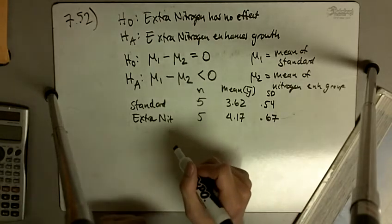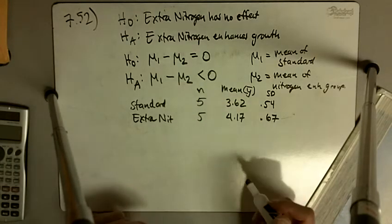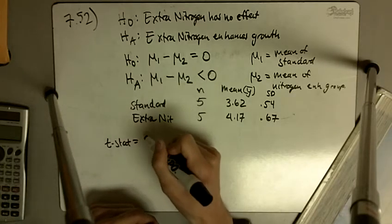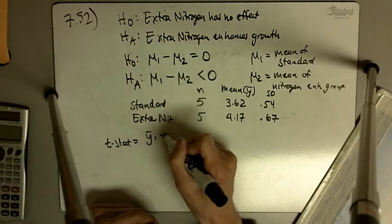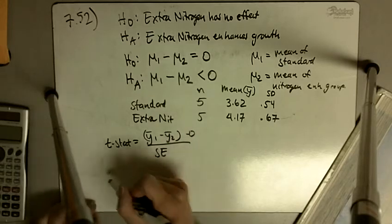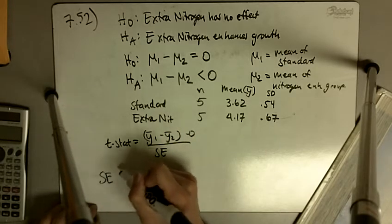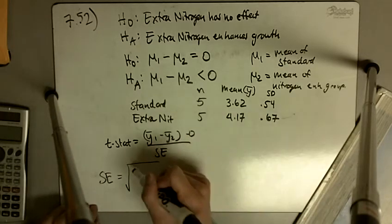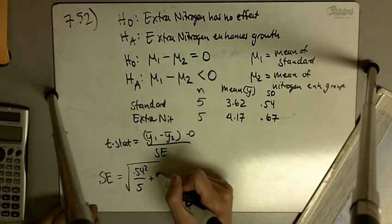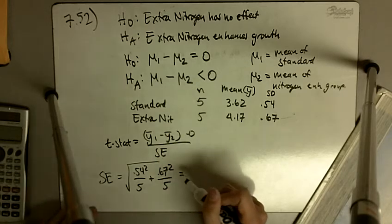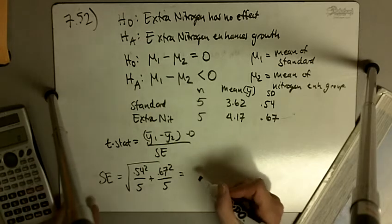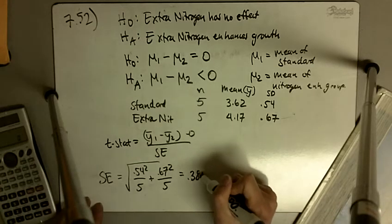So we have to find a test statistic and do our calculations from there. Our t-statistic is going to be y1 bar minus y2 bar minus zero over our standard error. So our standard error is going to be the square root of 0.54 squared over 5 plus 0.67 squared over 5, and when we do that, punching all of this out, we get 0.3848.